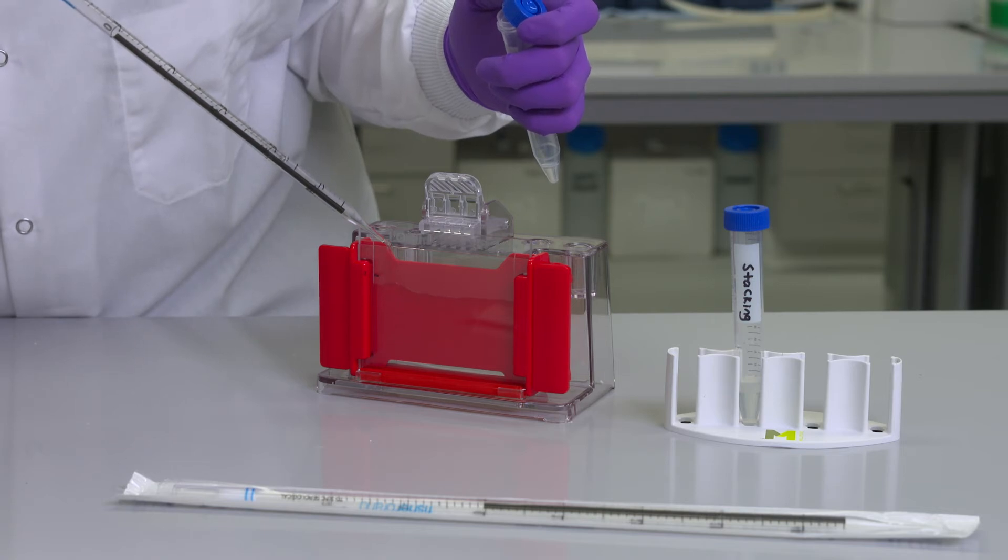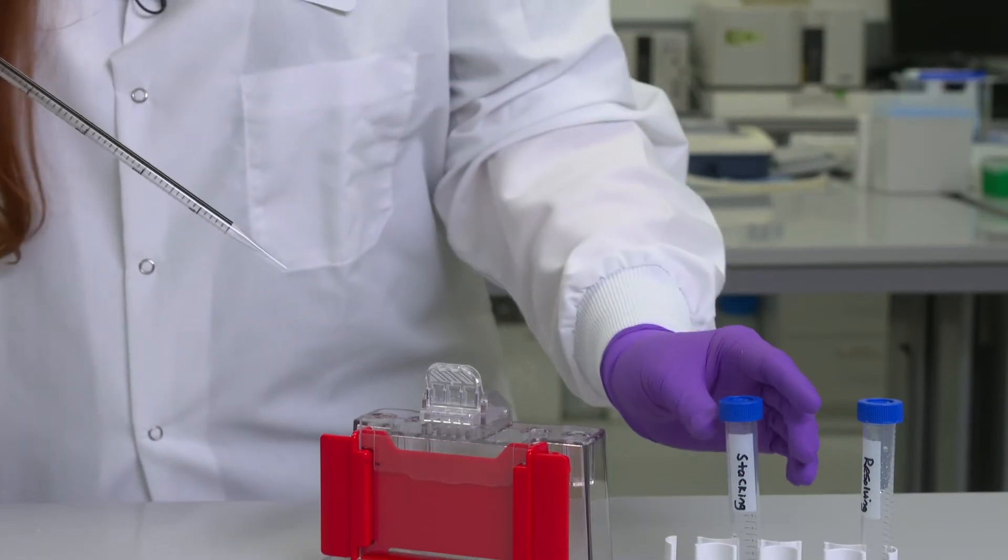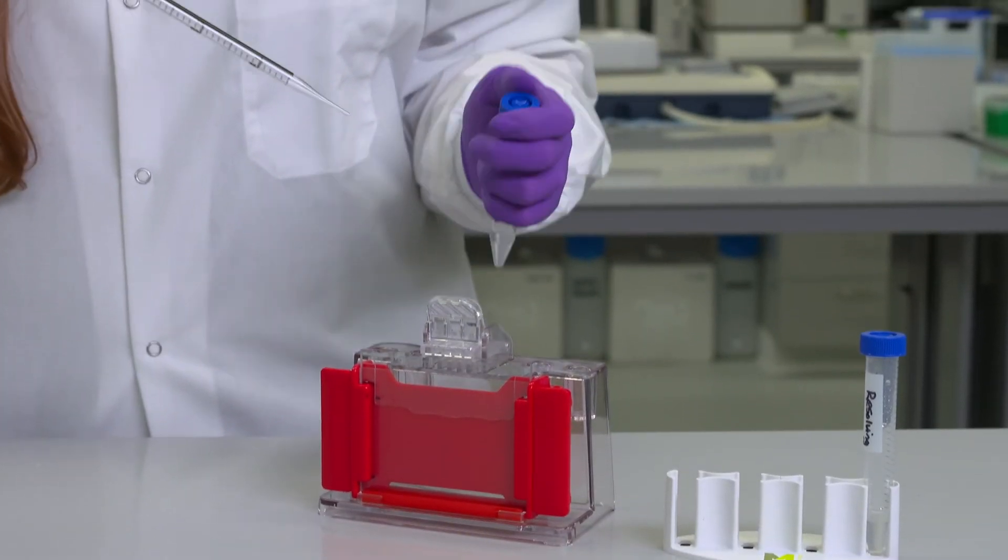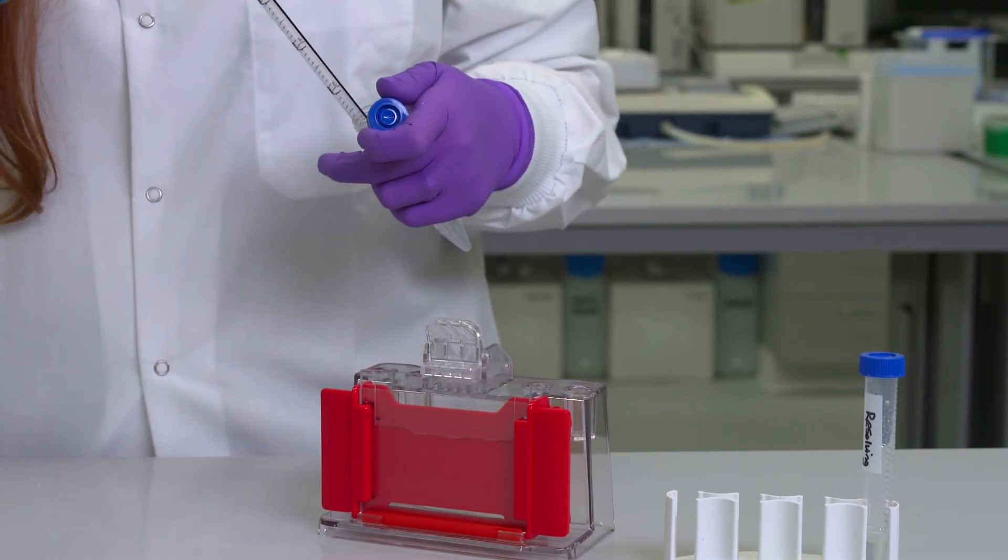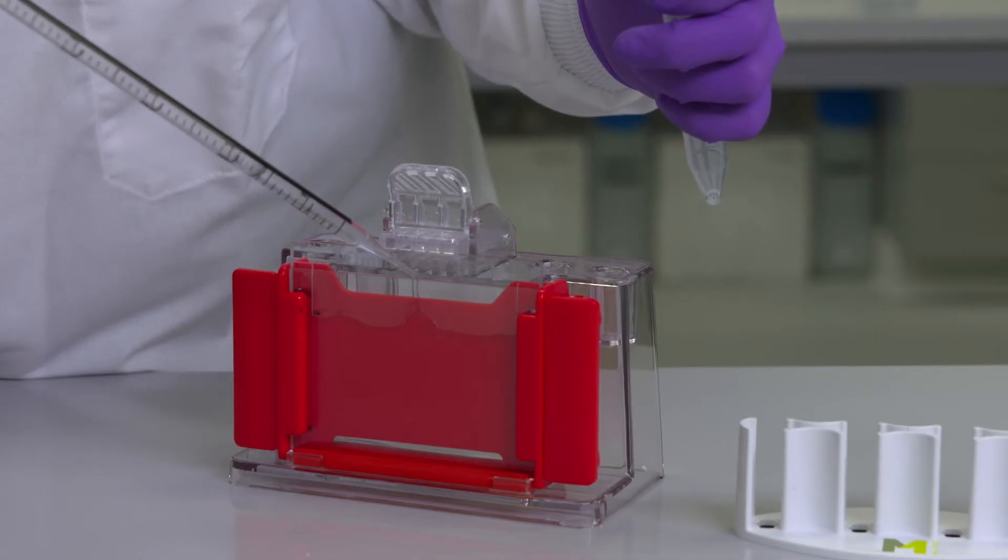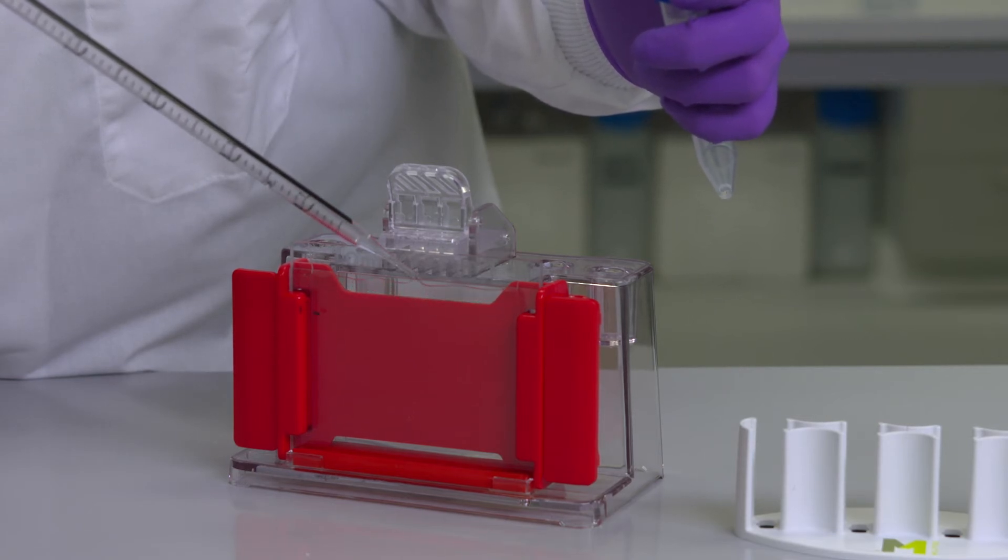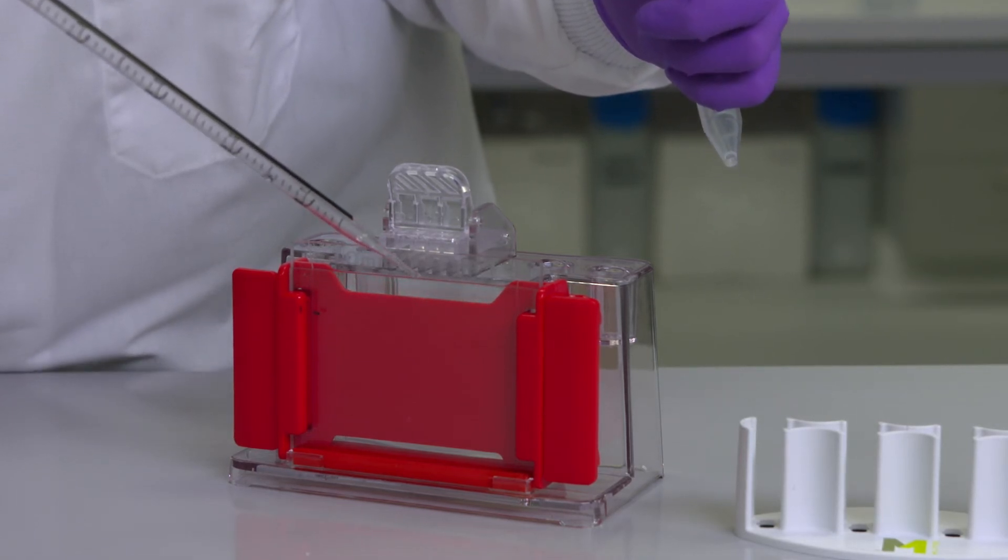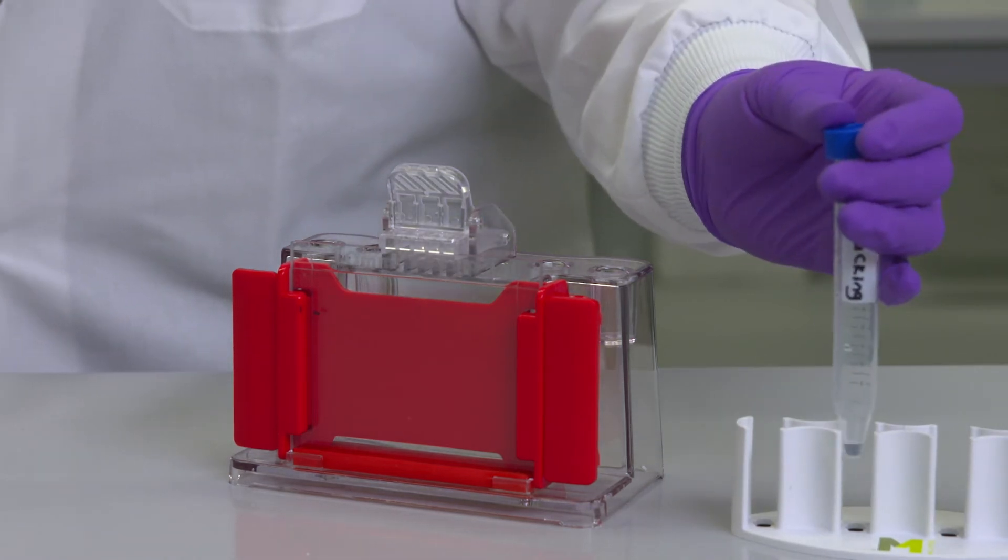The stacking gel can be added directly on top of the resolving gel without waiting for polymerization. You may see a dip form where pipetting takes place and this will level out over time. Add enough stacking gel to reach the top of your cassette and this will prevent bubble formation around the comb teeth.